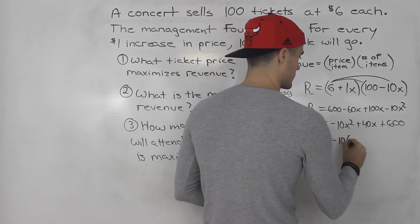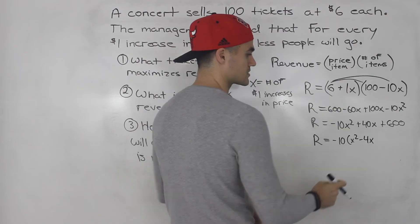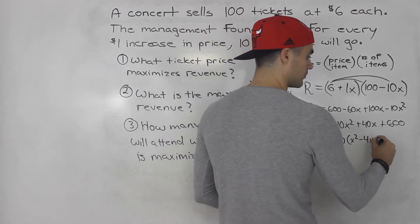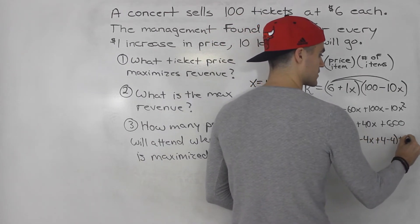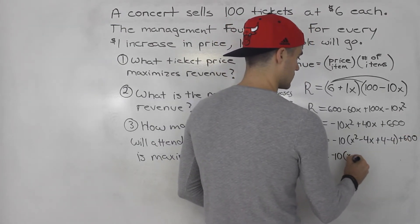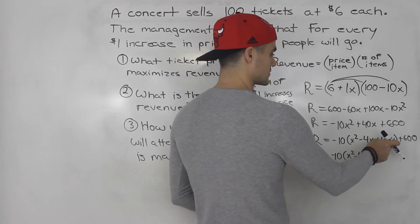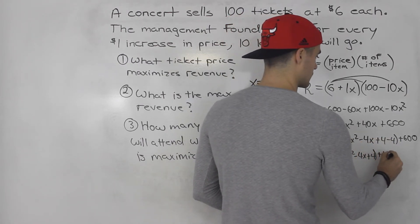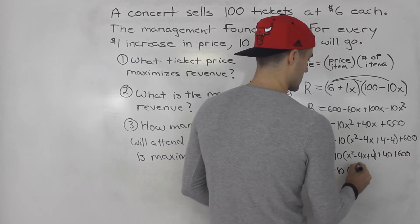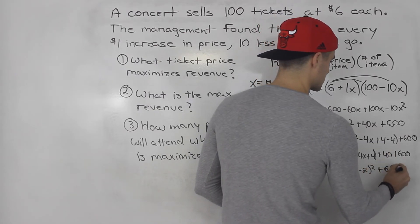If we complete the square on this, this would be negative 10 times x squared minus 4x. Negative 4 divided by 2 is negative 2 squared is positive 4. So we got plus 4 minus 4, and then the plus 600 we keep outside. This here would be x squared minus 4x plus 4. Bring the negative 4 out, so negative 4 times negative 10 gives us positive 40 plus 600. This factors into negative 10 times x minus 2 squared plus 640.